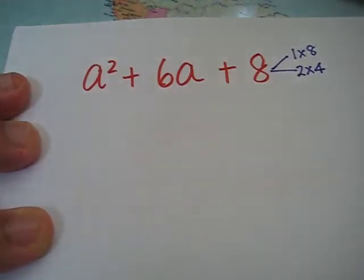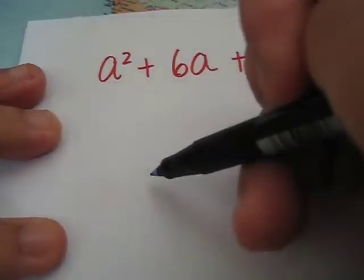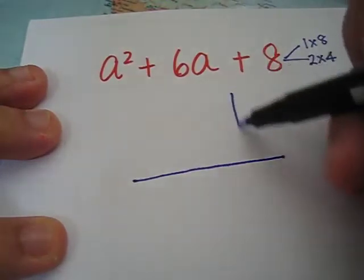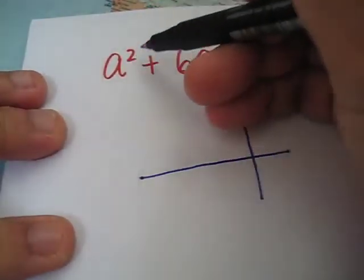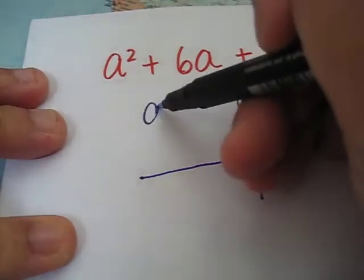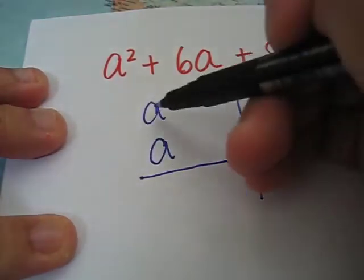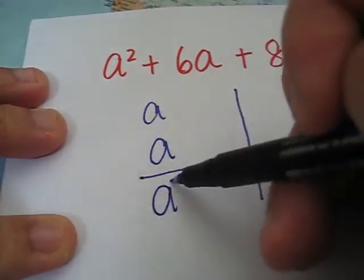We are going to use the cross method. First of all, we draw this. a squared is same as a times a. a times a will give us a squared.